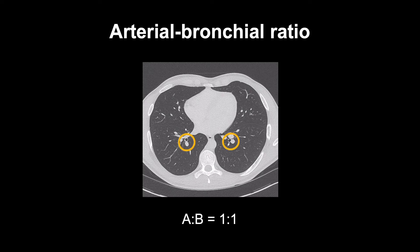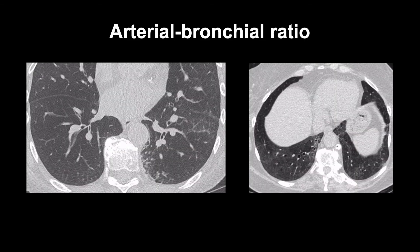The diameter of the artery and the accompanying bronchus should be about the same — this is called the arterial-bronchial ratio. It is very useful in evaluating the pulmonary vasculature, since the bronchus, made of cartilage, doesn't change size with increased pulmonary vascular pressures, while the artery does. Normally the ratio is 1 to 1, with arteries being a bit larger in the dependent lung and a bit smaller in the non-dependent lung due to gravity. If the artery is larger than the bronchus, it's a sign of increased vascular pressure. If the bronchus is larger than the artery, assuming normal vascular pressures, it may indicate bronchiectasis.